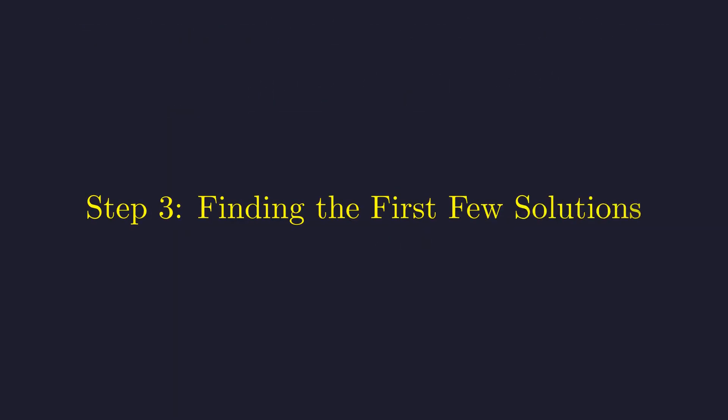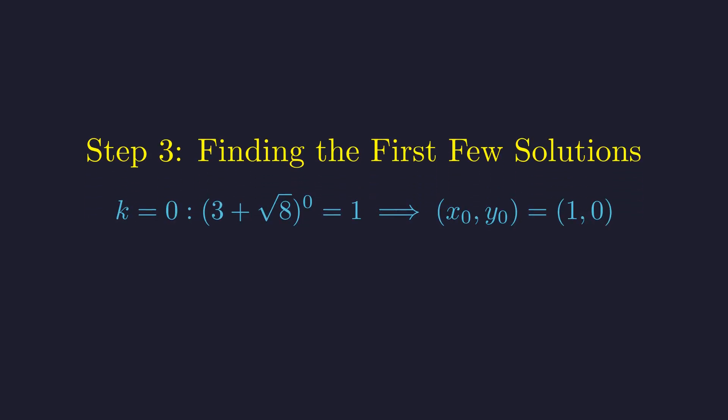Let's generate the first few solutions for x, y, and then convert them back to solutions for n, m. For k equals 0, we get the trivial solution: x sub 0, y sub 0 equals 1, 0.